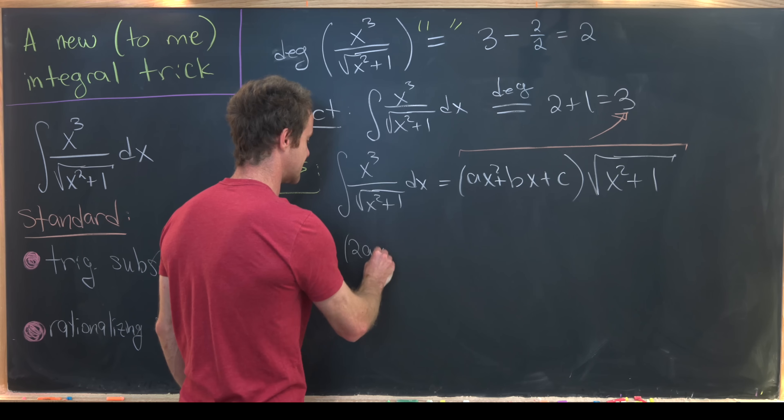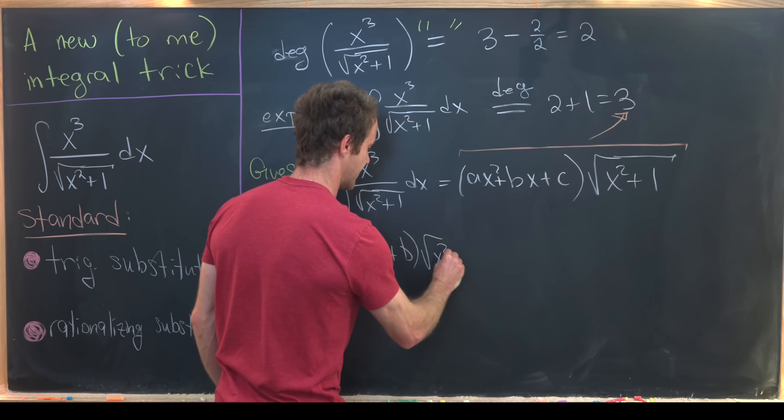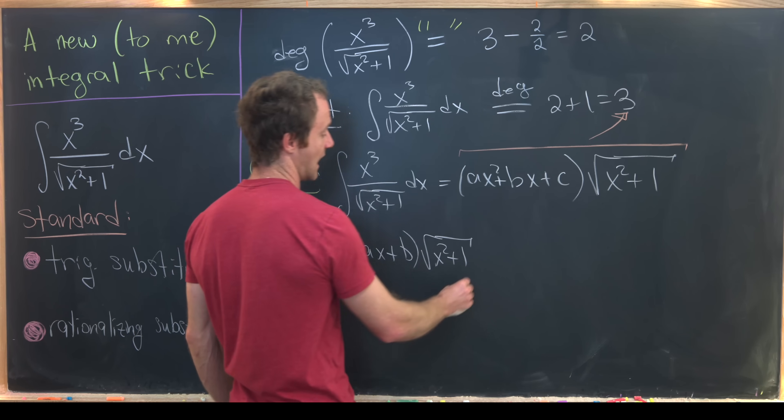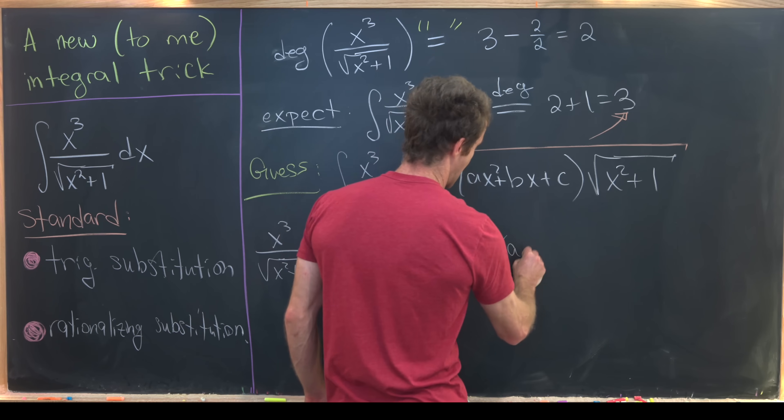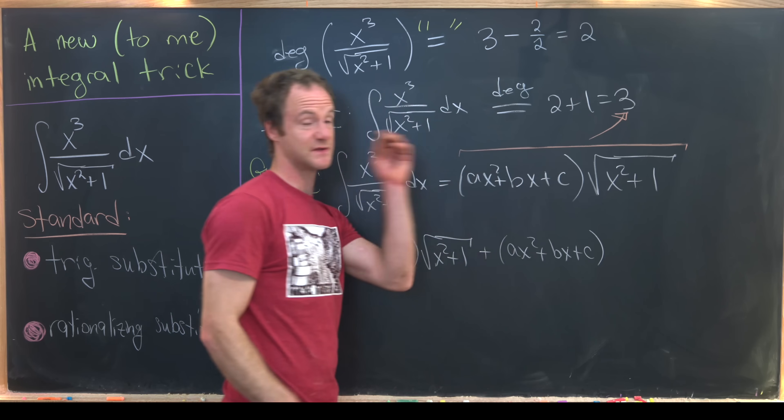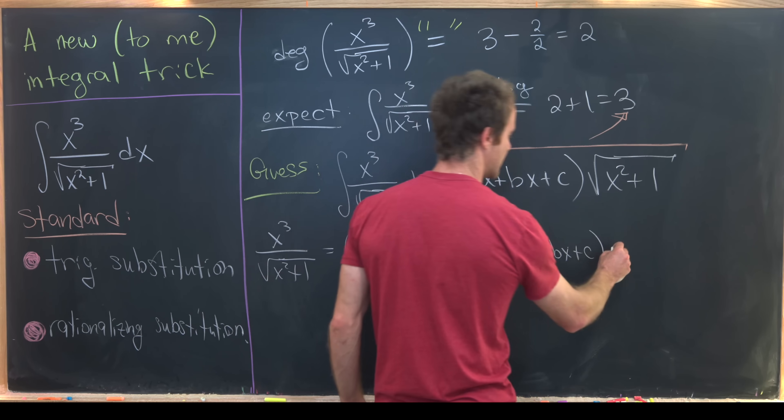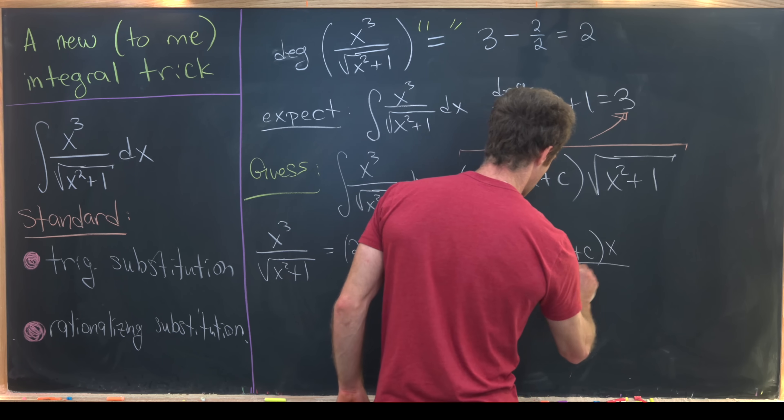Now we'll take the derivative of the right-hand side using the product rule. So that'll give us 2 times ax plus b, that's the derivative of this first term, times the square root of x squared plus 1. And then plus ax squared plus bx plus c times the derivative of this second term. We've got to use the chain rule on that, but what we'll end up with is x over the square root of x squared plus 1.